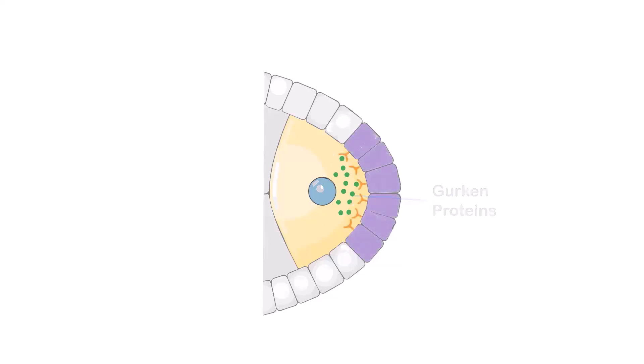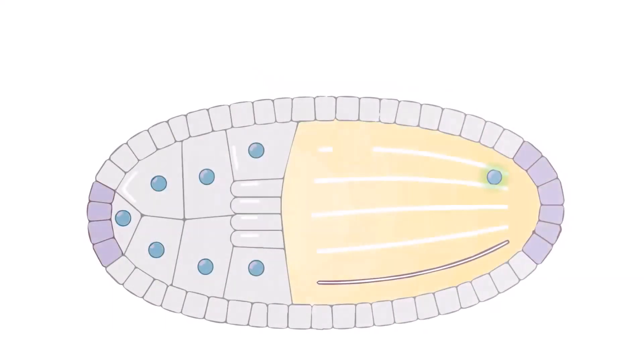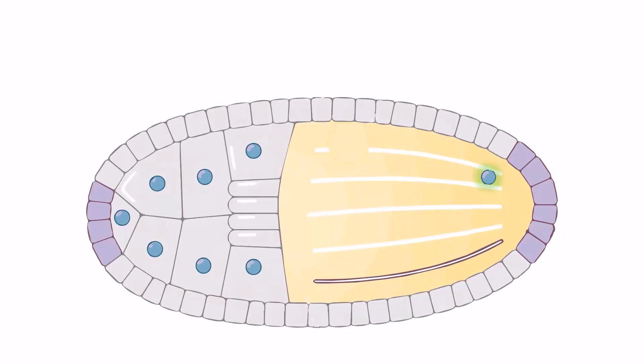The terminal follicle cells express Torpedo, the receptor for Gurken. When Gurken binds to Torpedo, the terminal follicle cells differentiate into posterior follicle cells and synthesize a molecule that activates protein kinase in the egg.